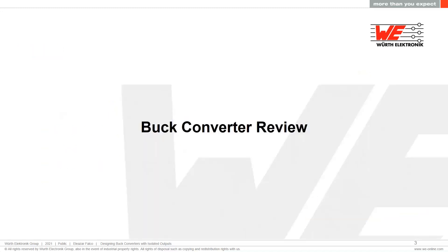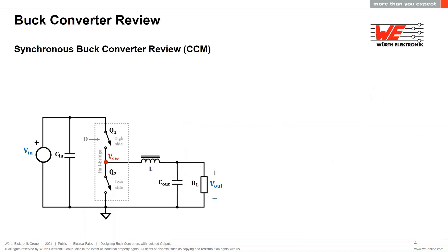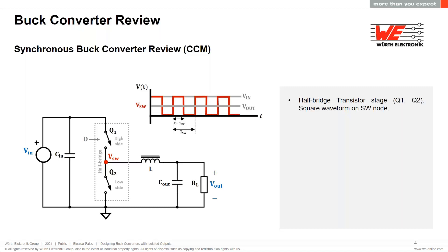Let's start with a quick review of the buck converter operation. The synchronous buck converter is built with two transistors — typically MOSFETs — in a half-bridge configuration; both transistors are represented as controlled switches for simplification. The high-side MOSFET connects to the input voltage rail and the low-side MOSFET connects to power ground. In normal operation, the MOSFETs switch alternately, generating a square voltage waveform at the switch node, which is the node linking the two devices.